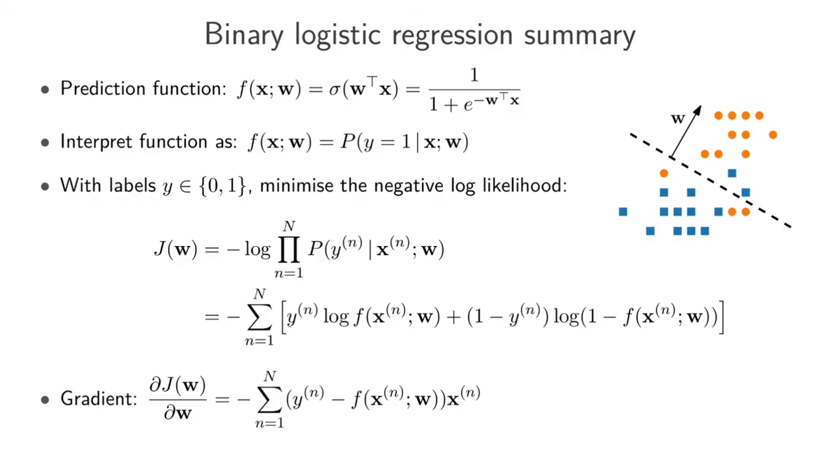So, here I just wanted to summarize basically everything that we've done up to now with binary logistic regression. We've defined a prediction function, where we have similar to linear regression, a weight vector multiplied by a feature vector, which we then squash to basically get outputs between 0 and 1. We interpret the output of our model as a probability for being in the positive class. And to figure out how to set this parameter vector, we use maximum likelihood estimation, which is the equivalent of minimizing the negative log likelihood.